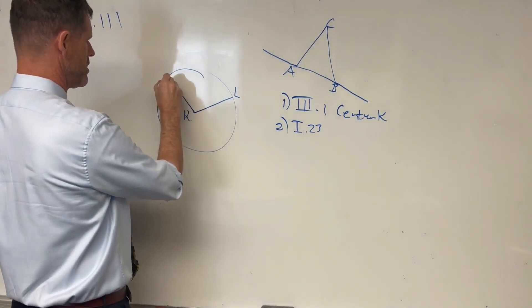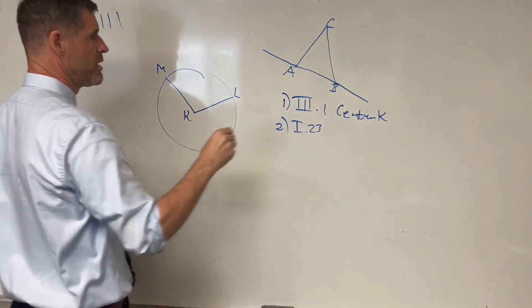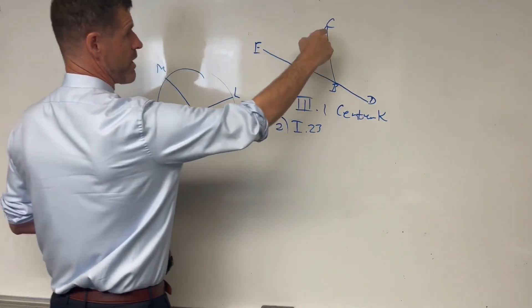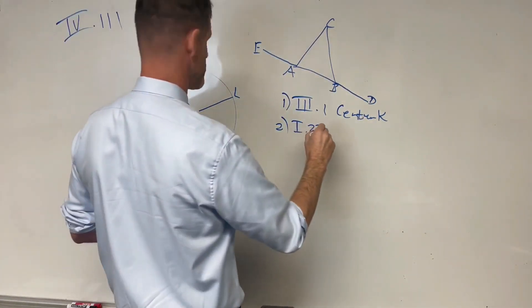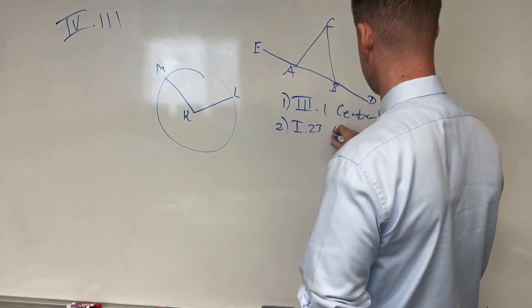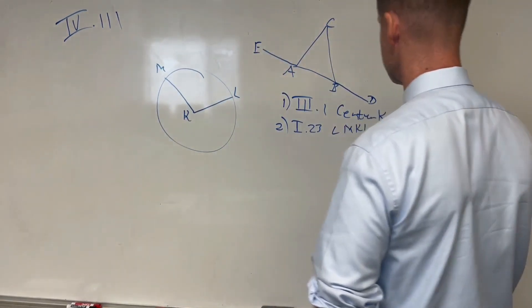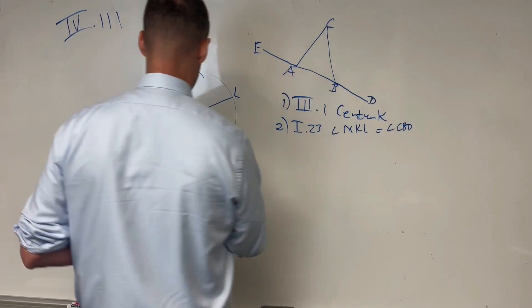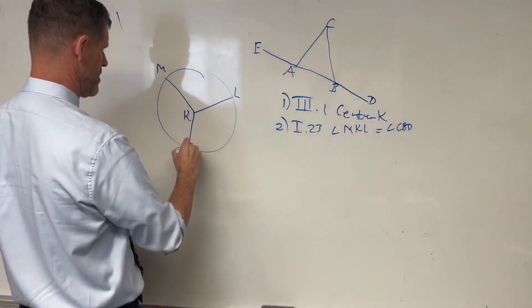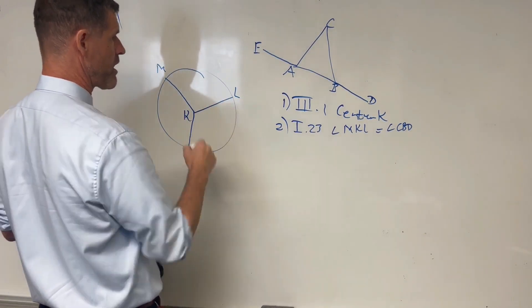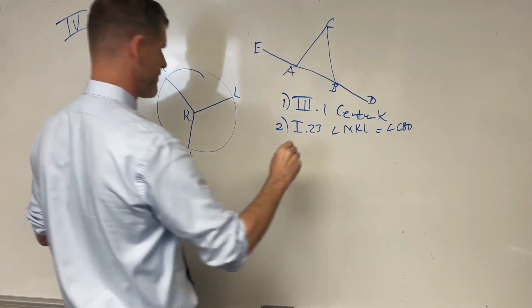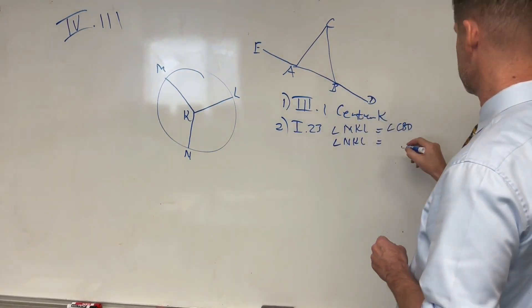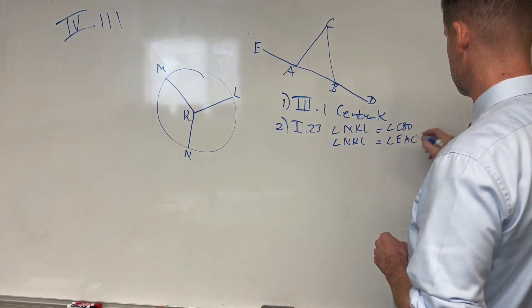And then utilizing Prop 23, we're going to create an angle LKM that is going to be equal to our angle CBD. And we'll write this up, so we say angle MKL equals the angle CBD. And then we use Prop 23 a second time. And we make angle NKL equal to the angle EAC. So angle NKL equals the angle EAC.